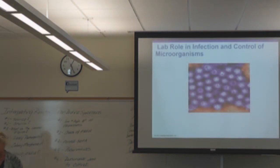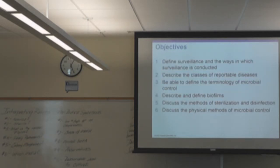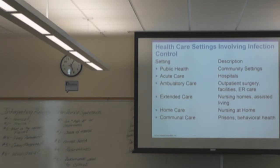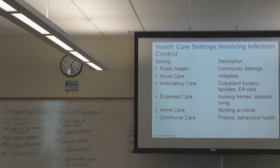This lecture has a lot of definitions to go through. You have to know the healthcare setting and what its description is. If I say acute care, remember it's going to be hospitals. Ambulatory care is outpatient surgery, ER care, that type of thing. Make sure you know that list and can differentiate between the settings — that's on the test as well.